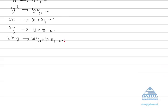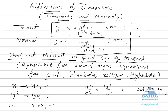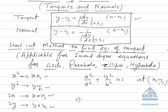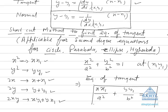Taking a simpler example — you might have done this in your 12th examination. For the ellipse x²/a² + y²/b² = 1, to find the equation of tangent at (x1, y1): just convert x² into xx1, and the equation of tangent becomes xx1/a² + yy1/b² = 1. You can directly get the equation of tangent in just one step.